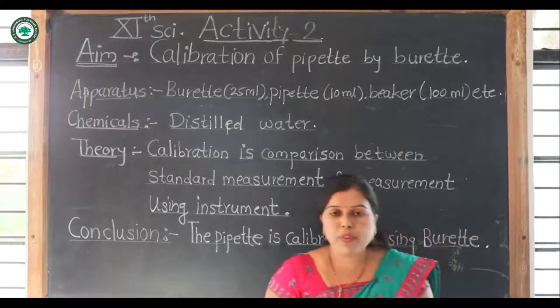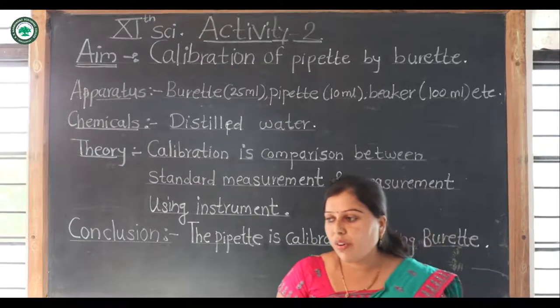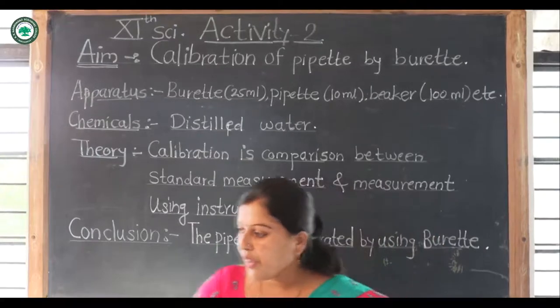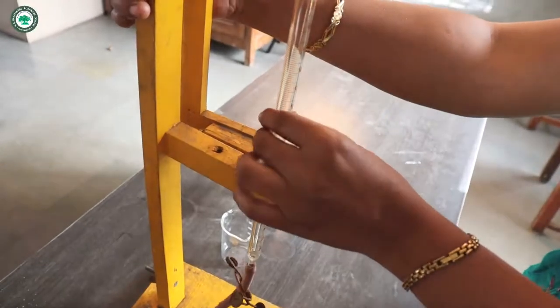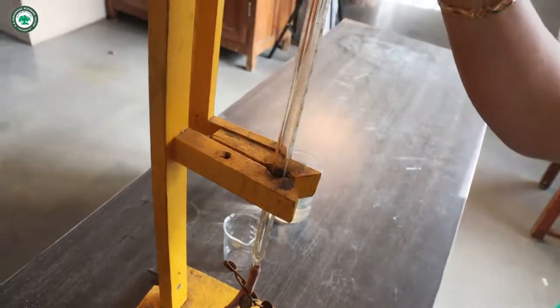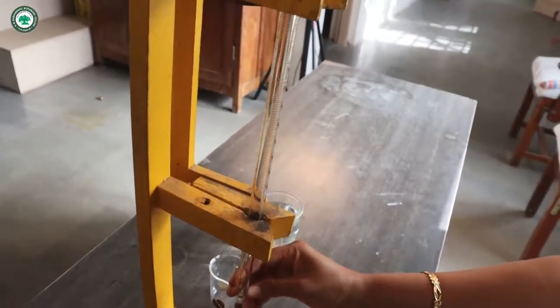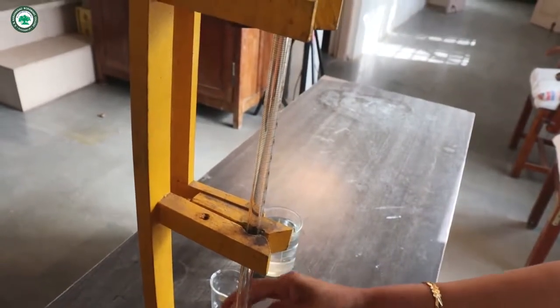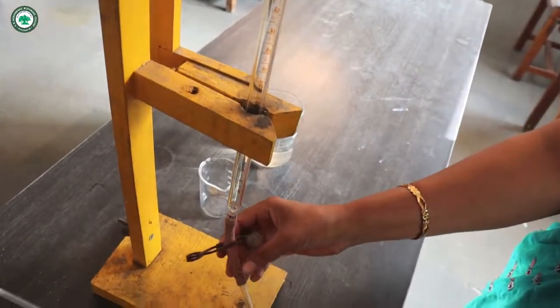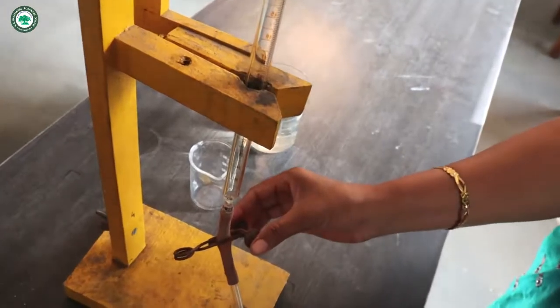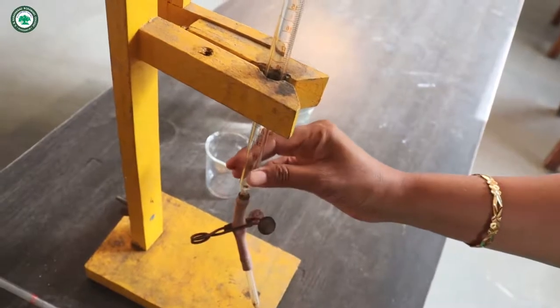How to perform the practical? First of all, we introduce the apparatus. This is our buret. On this buret, 0 to 1, 1 to 2, up to 25 ml calibration. This buret uses a nozzle and pinch of cork. This cork is used to remove the air bubble.